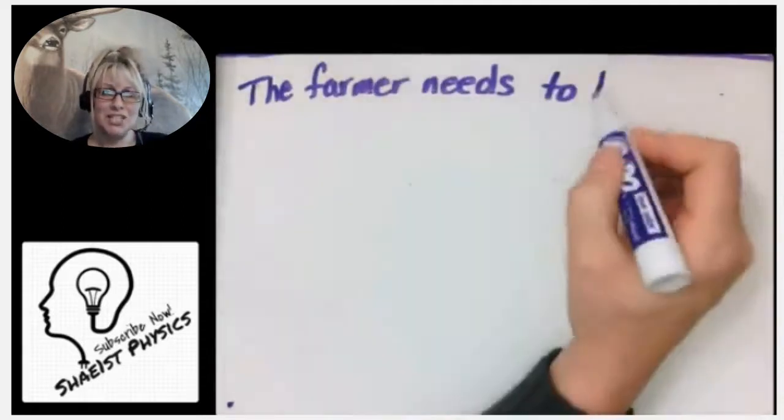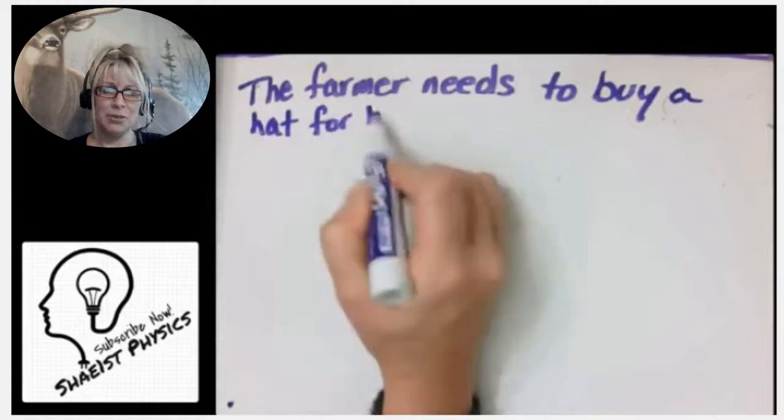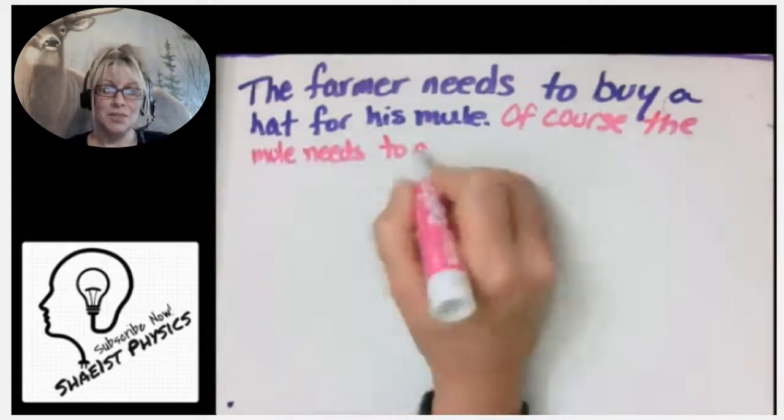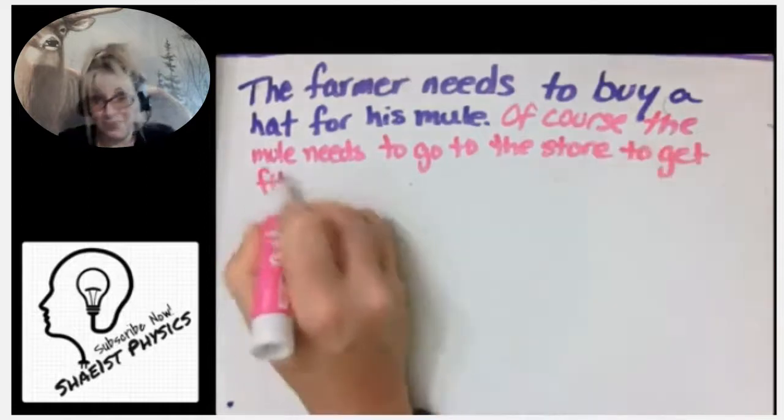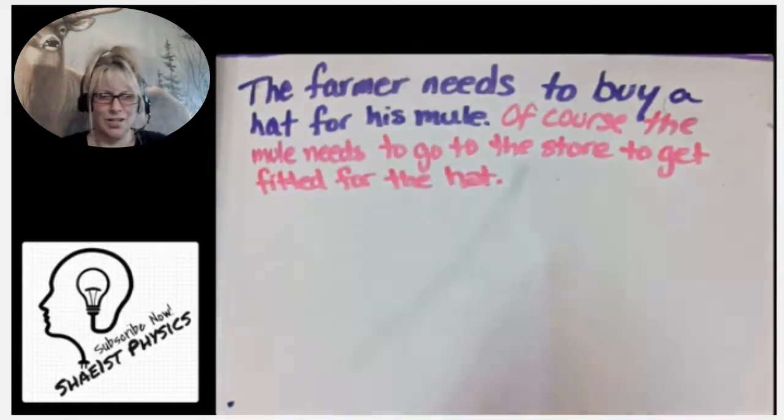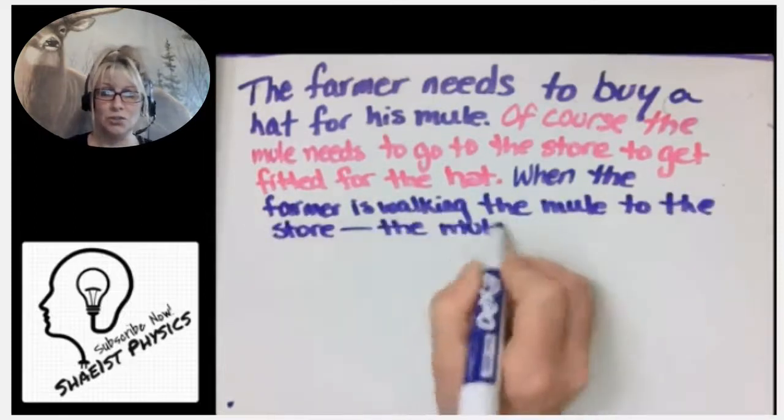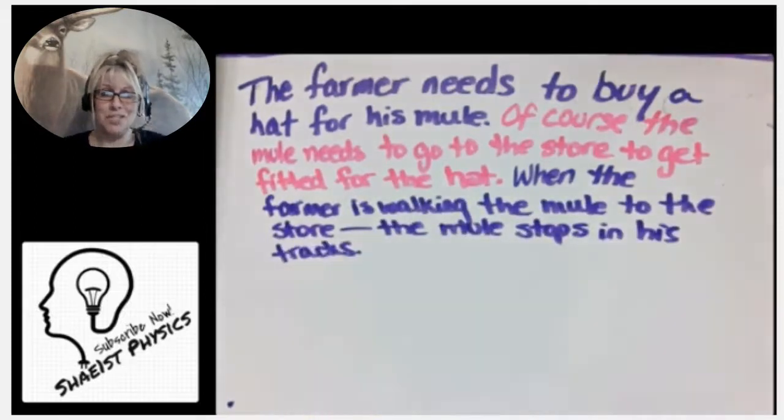So the farmer needs to buy a hat for his mule. Of course the mule needs to go to the store to get fitted for the hat because their heads are kind of odd shaped. And when the farmer is walking the mule to the store, the mule stops in his tracks.